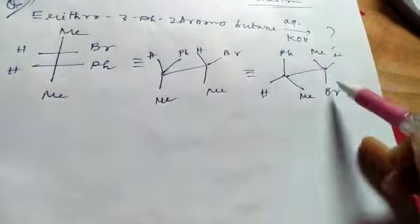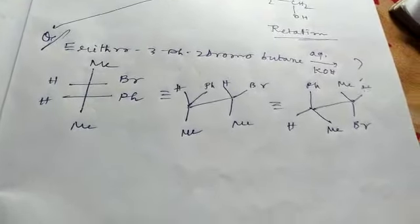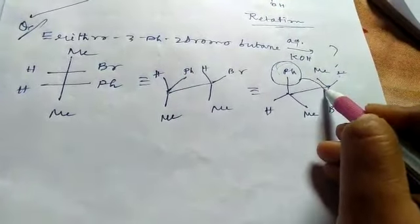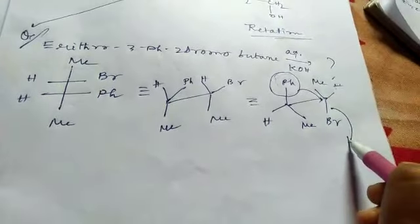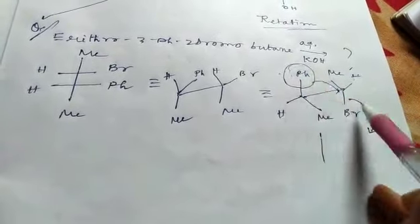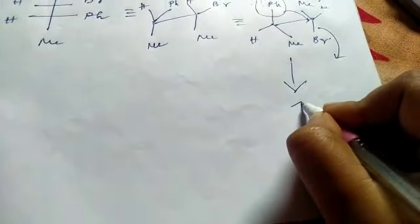So here, phenyl group acts as neighboring group and attacks the carbon atom and Br minus leaves the substrate. This is the arrangement of anti-periplanar orientation of these two groups. Here is neighboring group and another is leaving nucleophile.